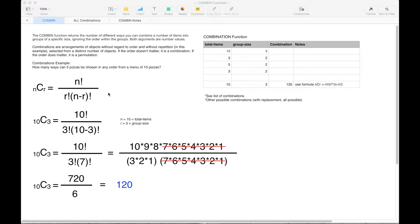So let's go ahead and go over an example. Our example is, how many ways can three pizzas be chosen in any order from a menu of ten pizzas? So here we have our formula.